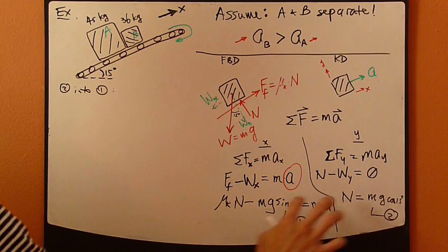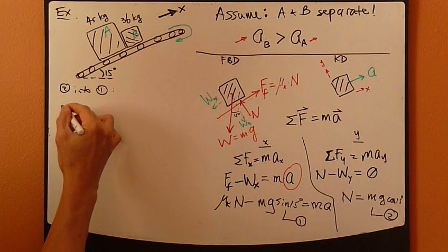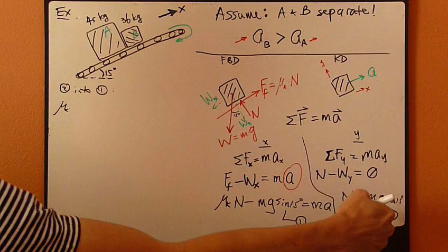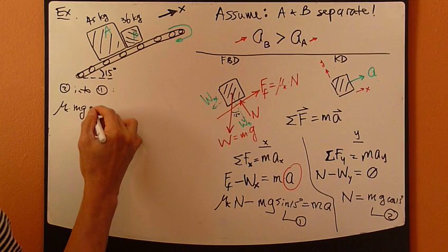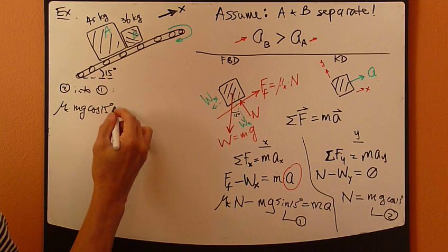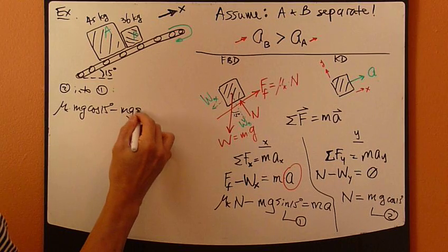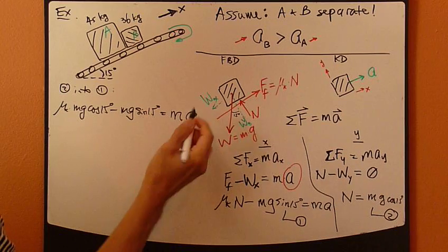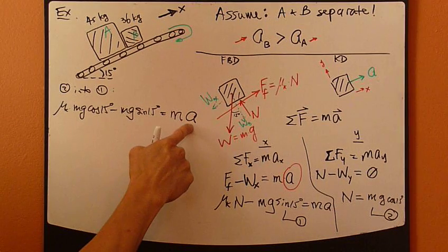So now we have mg cosine 15 minus mg cosine 15 equals ma, the unknown.